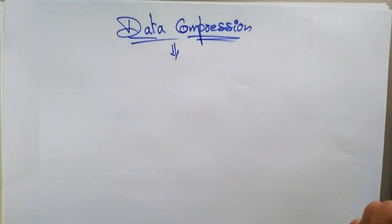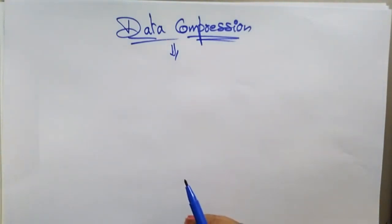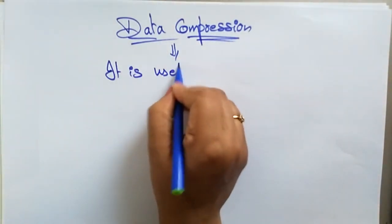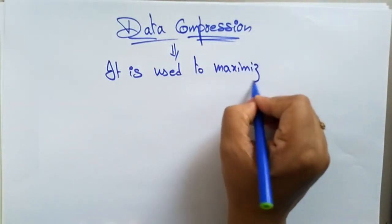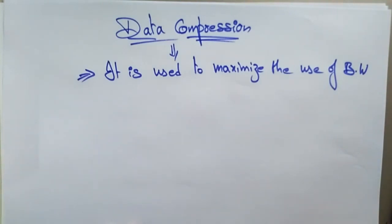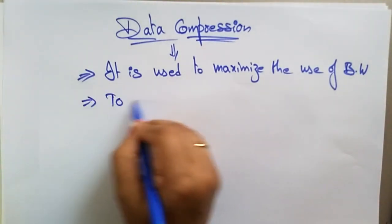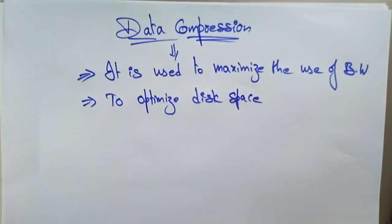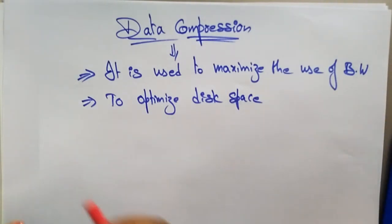Data compression is a function of the presentation layer in the OSI reference model. The presentation layer performs data compression. Compression is often used to maximize the use of bandwidth across a network, or to optimize disk space — meaning to reduce the disk space used. So compression is used to maximize bandwidth over the network and to optimize disk space.